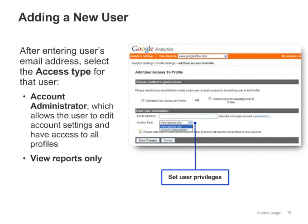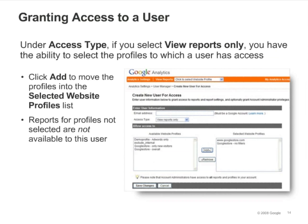Use the Access Type drop-down to select the level of access you want to give the new user. You can either grant read-only access to certain reports, or you can make them an administrator. Remember that administrators can view all reports and modify account settings. If you select View Reports Only, the interface will show you a list of all profiles associated with your account. Select the profiles you would like this user to have access to, and click the Add button to apply your changes.